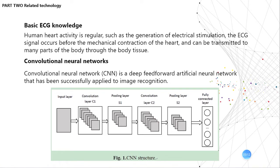The second component is the feature mapping layer. Each computing layer of the network can be composed of multiple feature maps. Each feature map can be described as a plane, and all neurons on the plane share the same weight. The CNN mapping structure uses the sigmoid function as the activation function of the convolutional network, making the displacement of feature maps invariant and greatly reducing the number of free parameters.